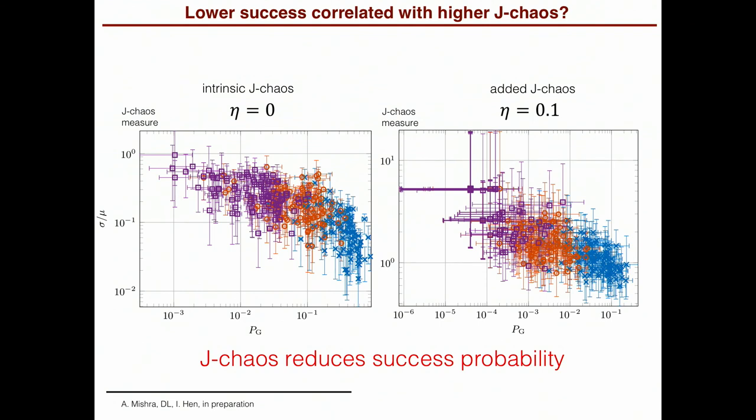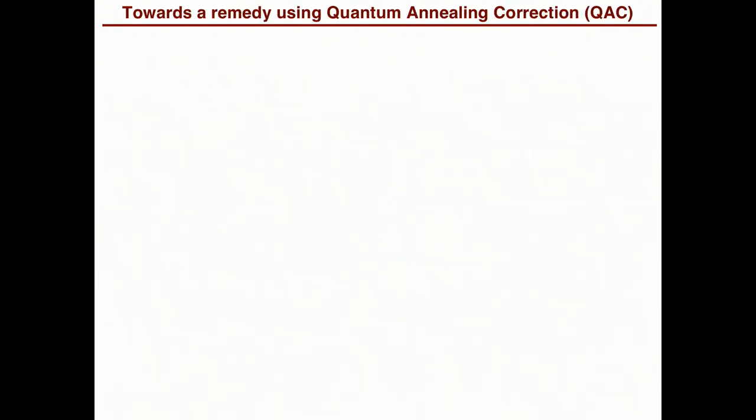So, so far this is totally in line with what we heard from Tamim. I think the effect is absolutely important, significant, and it does have to be dealt with. So now the question is what we can do about it. So the approach we wanted to test was quantum annealing correction, which some of you are familiar with. I will review it very quickly.